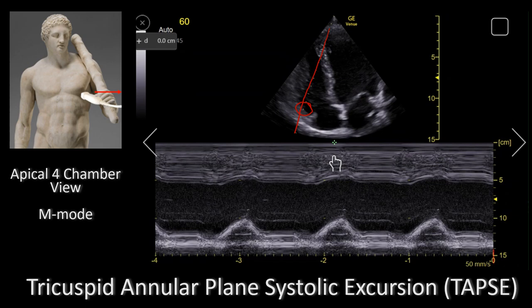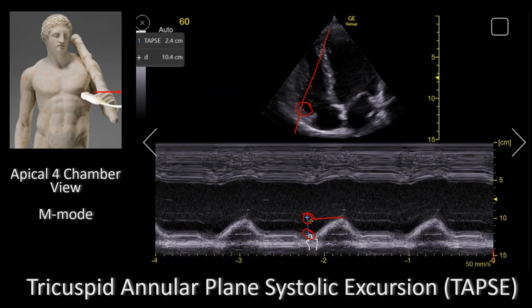You want to measure the amount of longitudinal motion of the annulus at peak systole. You place the cursor at diastole, which is right there, and you measure to the peak of systole, which is right there. What you're really interested in is the distance between systole and diastole.